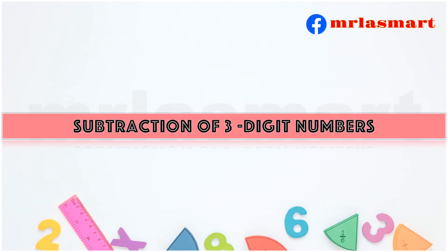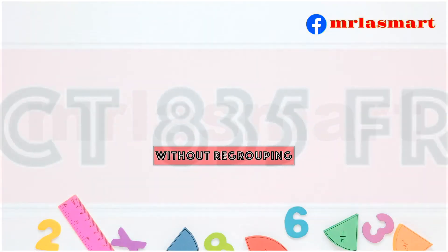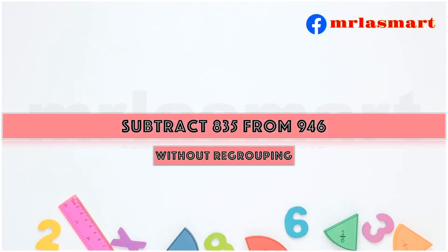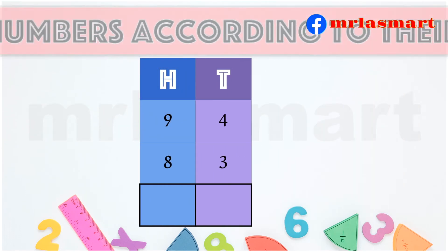Subtraction of three-digit numbers without regrouping. Subtract 835 from 946. Arrange the numbers according to their place values.